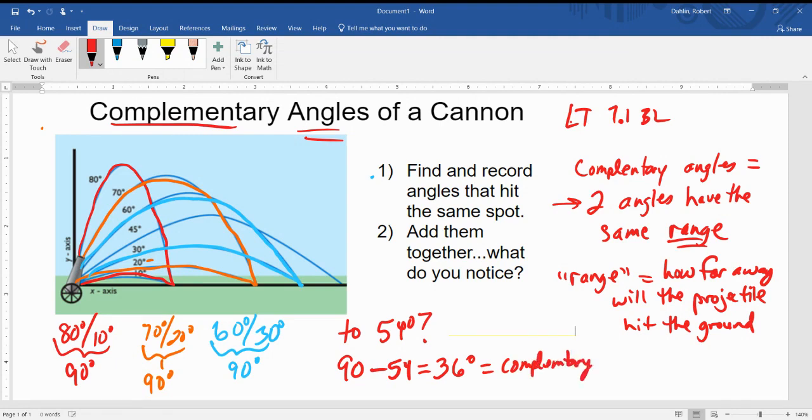And what that means for our projectiles is that a marble launched out of our launcher shot at 54 degrees and a marble, same marble, same strength launched at 36 degrees will hit the same spot. So that is complementary angles. If you have any questions, again, please email me.